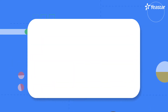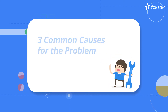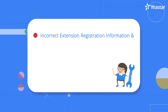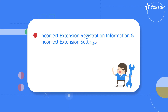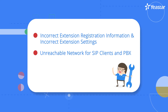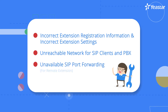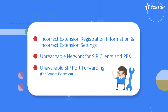Generally speaking, there are three common reasons for the problem. Number one, incorrect extension registration information and incorrect extension settings. Number two, unreachable network for SIP clients and PBX. Number three, unavailable SIP port forwarding for remote extension mostly.